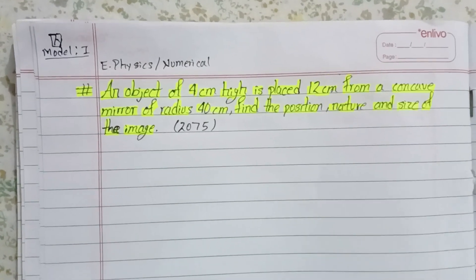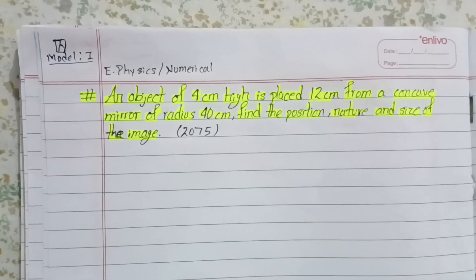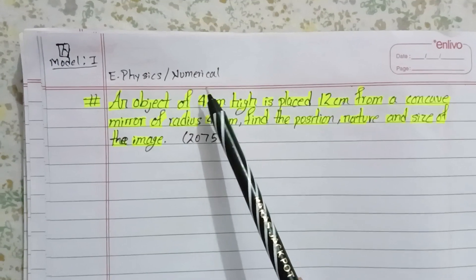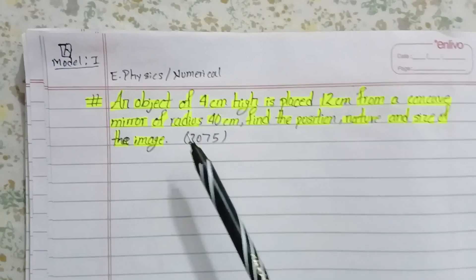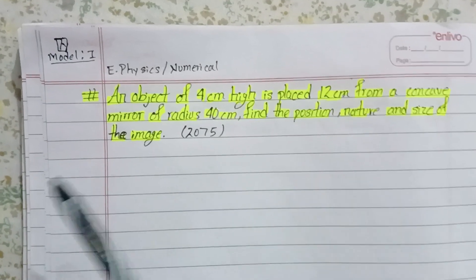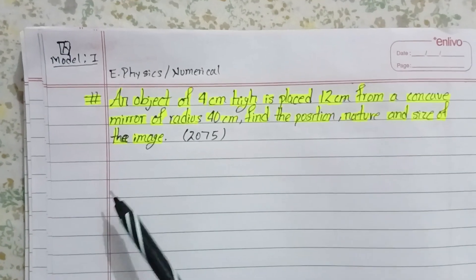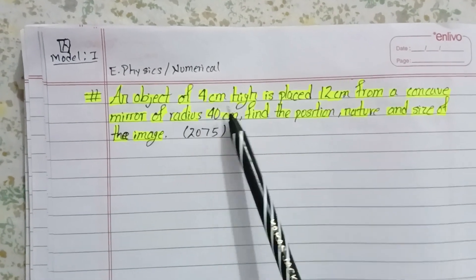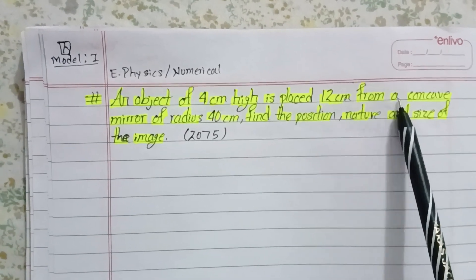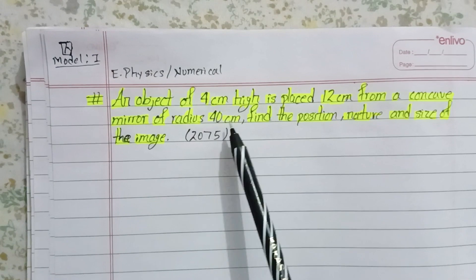Hello friends, I am your fairy. This is a video for first semester engineering physics with an important number question from the 2075 exam. The question is: An object of 4 centimeter high is placed 12 cm from a concave mirror of radius 40 cm.